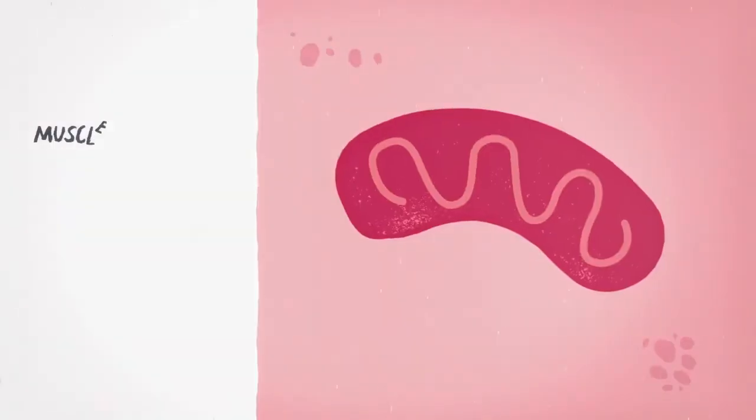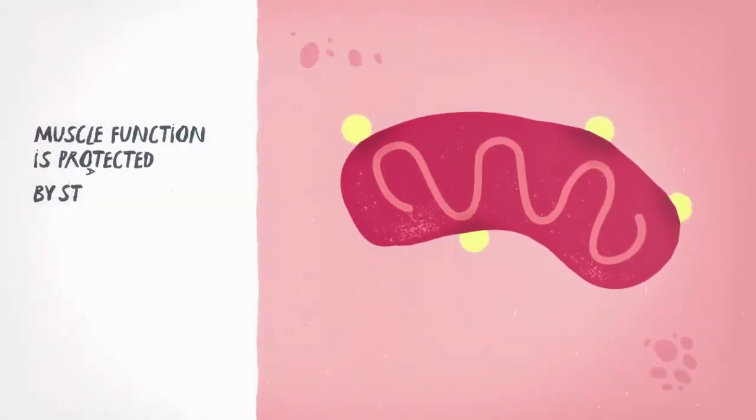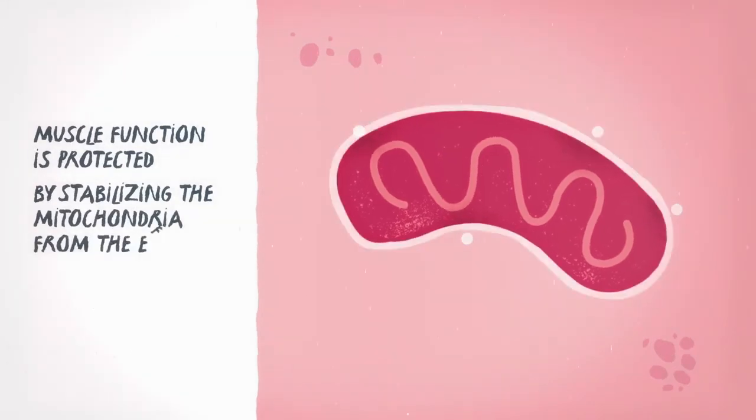In the third, muscle function is protected by stabilizing the mitochondria from the effects of the disease.